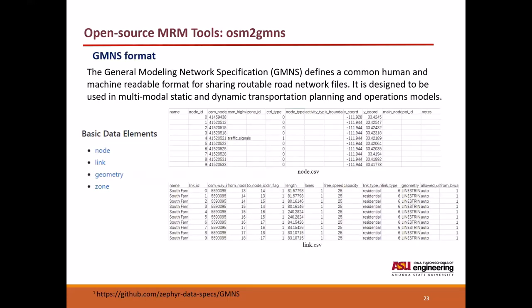The General Modeling Network Specification, GMNS, defines a common human and machine-readable format for sharing routable road network files. It is designed to be used in multi-modal static and dynamic transportation planning and operation models. The basic data elements in GMNS include node, link, geometry, and zone. A detailed introduction of the GMNS format can be found at the GitHub link on this slide.